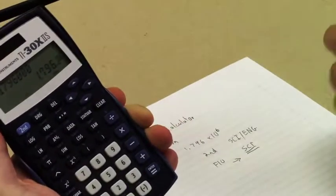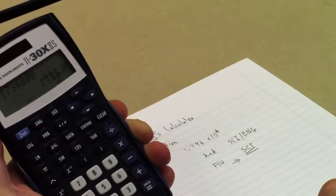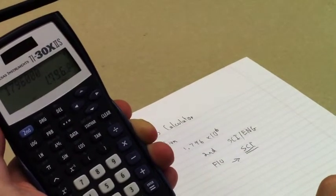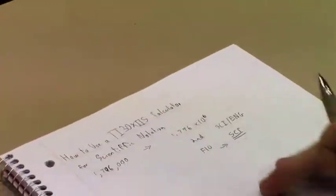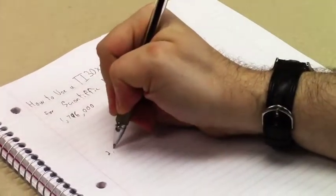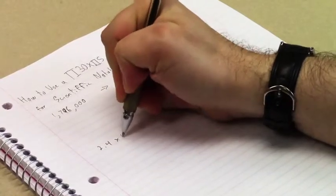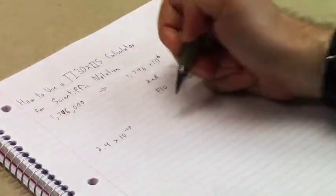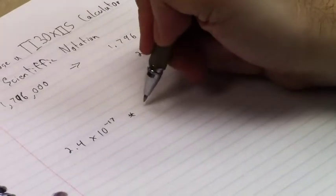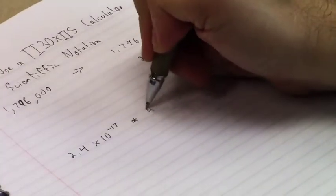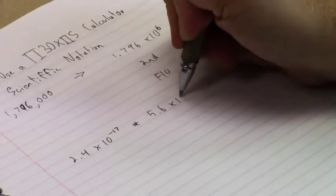Now, the real advantage to this is it makes it a lot easier to do calculations in this mode. So, let's say, for example, that we want to do 2.4 times 10 to the negative 17th times, let's say, 5.6 times 10 to the 9th.